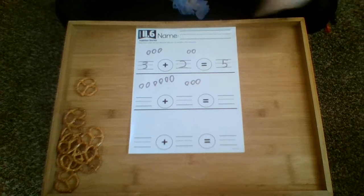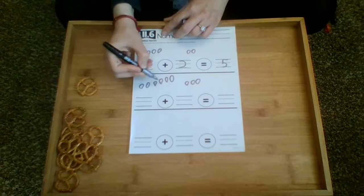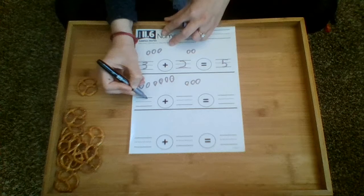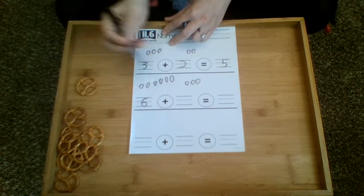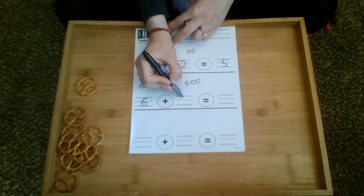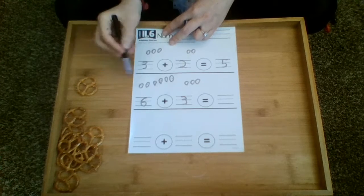How many apples do we have all together? Well we have our six, one, two, three, four, five, six. Make a C, close it up. And then we pick three more. Two, three.